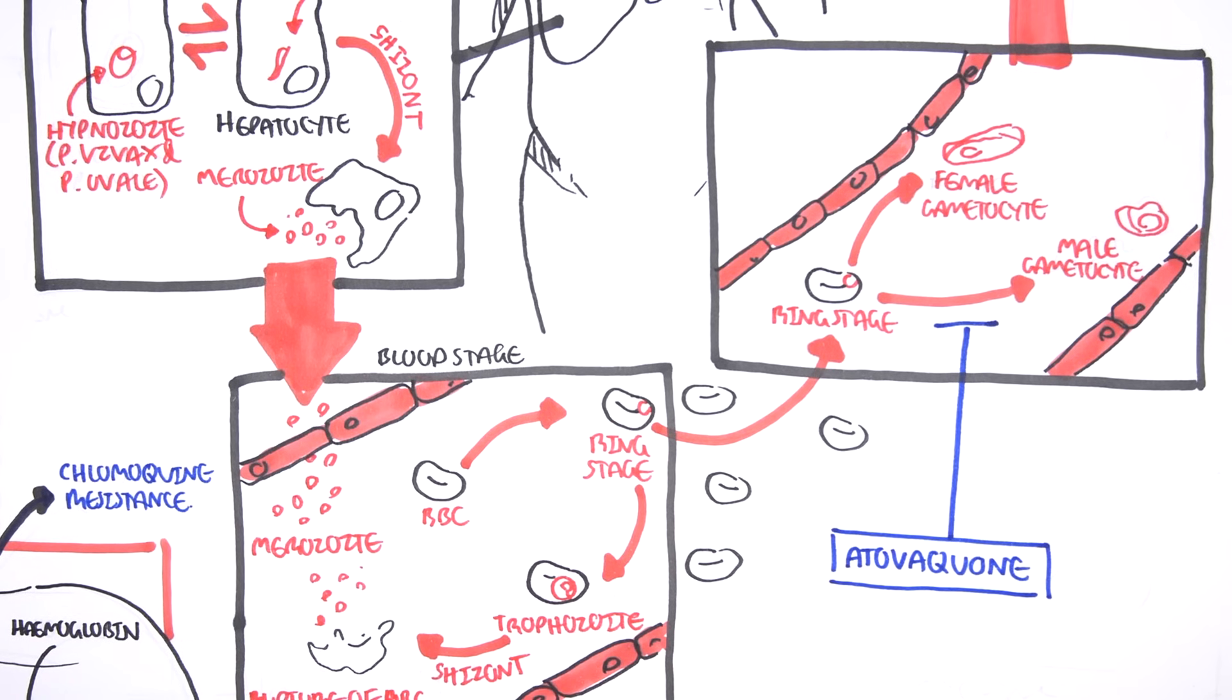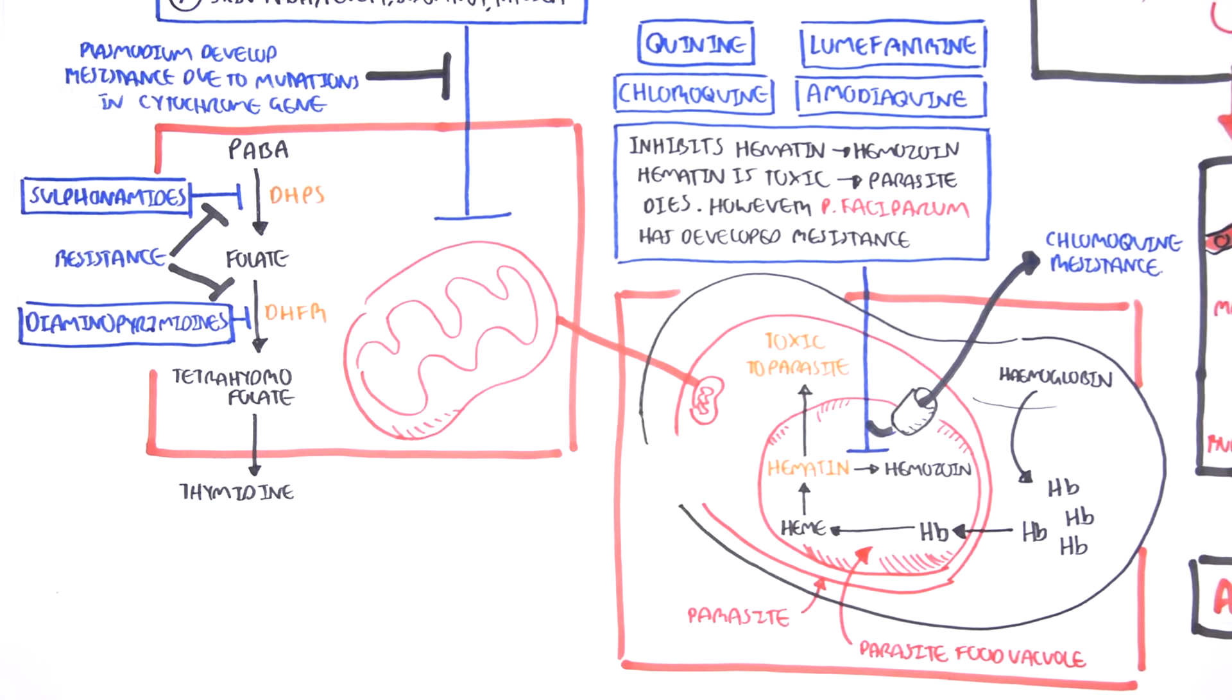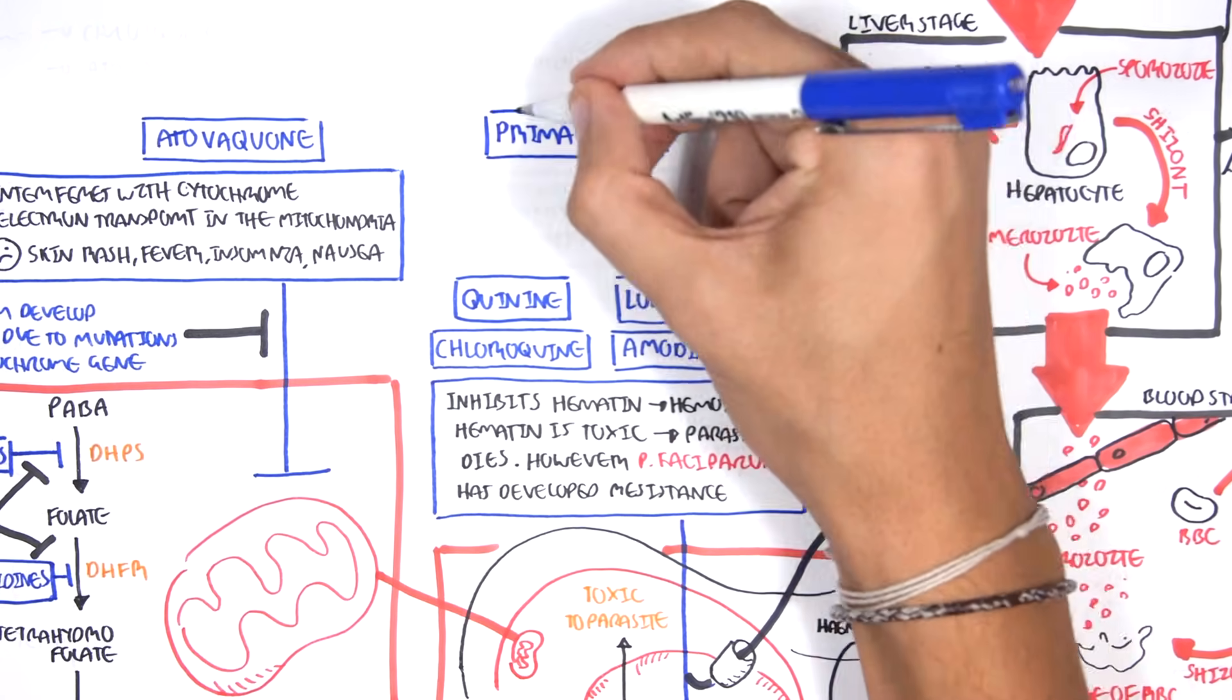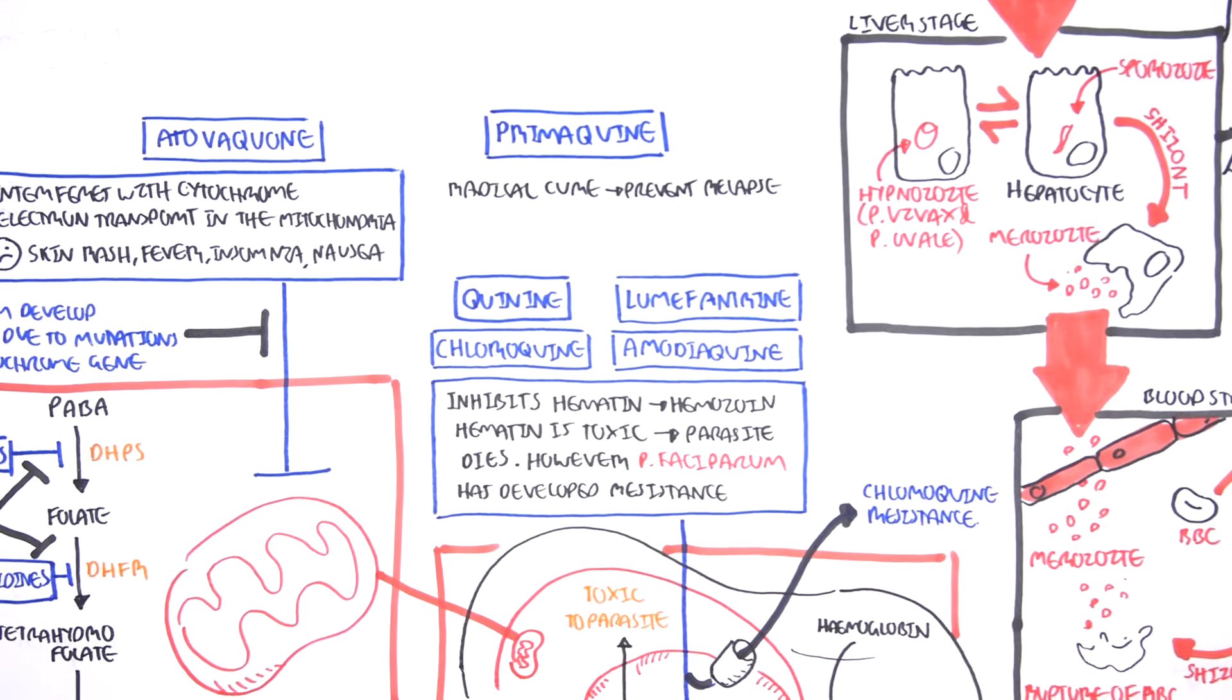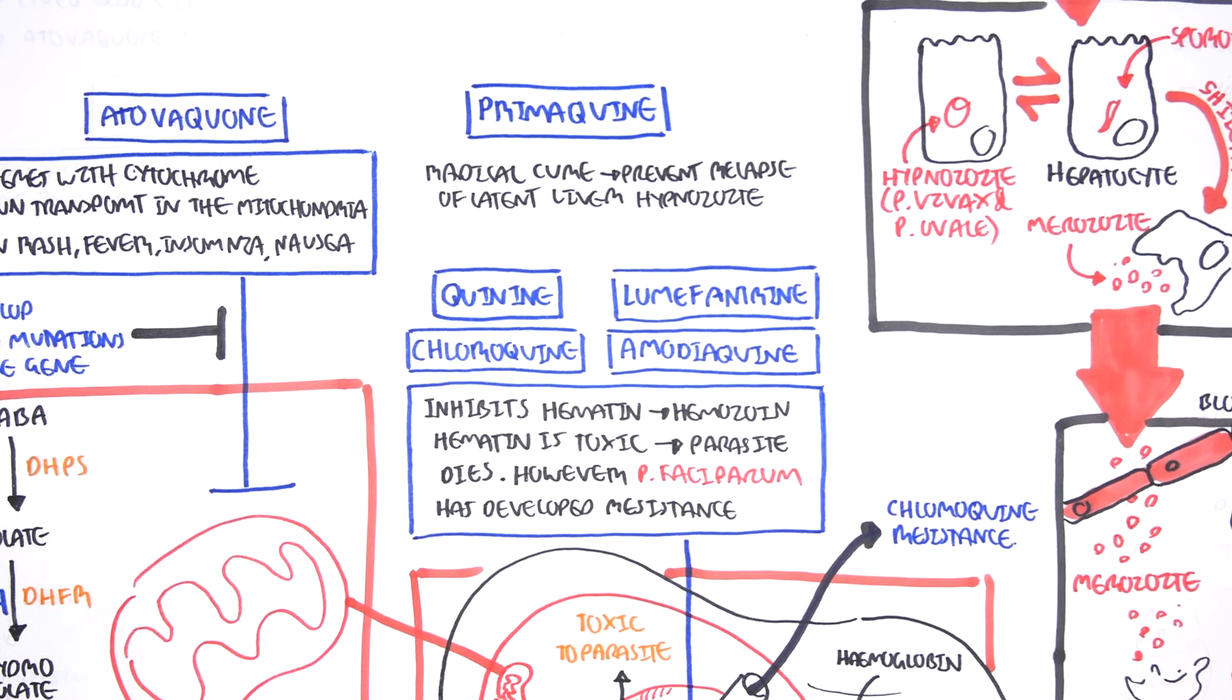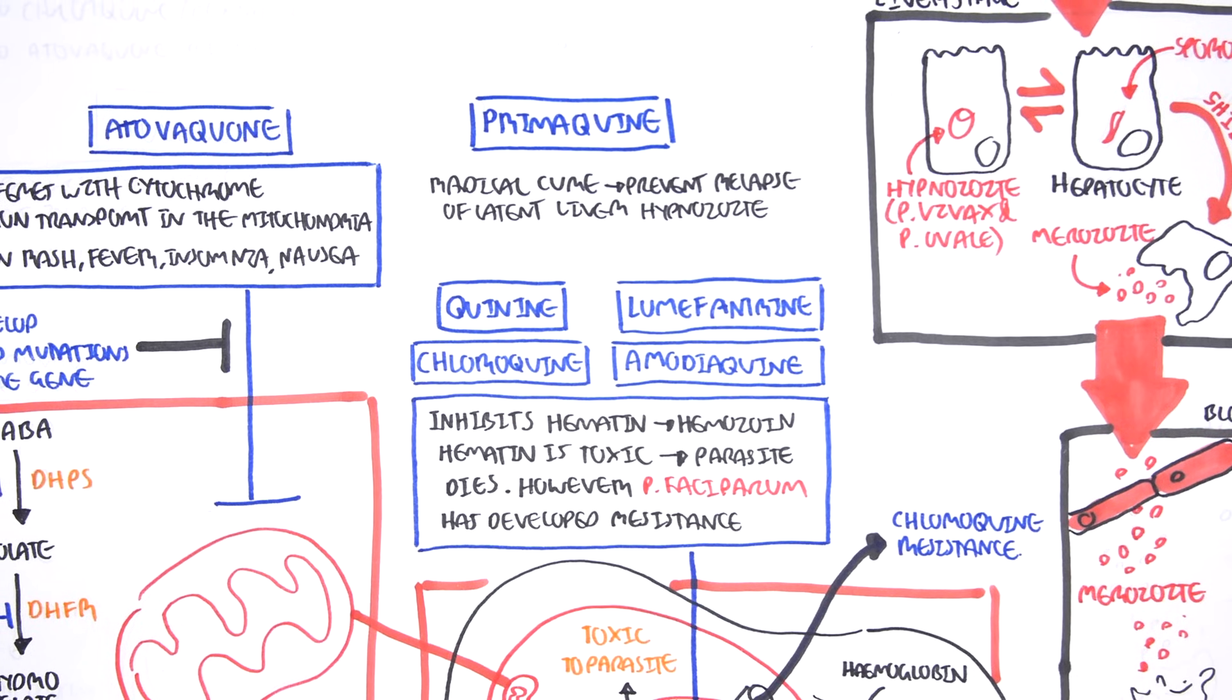There is another drug that targets the parasitic liver stage. This drug is called Primaquine. Primaquine is a radical cure, and it prevents the relapse of latent liver hypnozoites. So, it targets plasmodium ovale and vivax, because these are the species, these are the plasmodium strains that can become dormant.